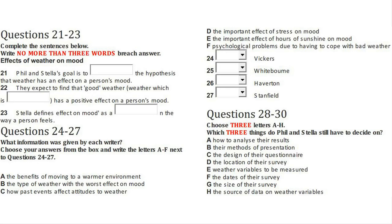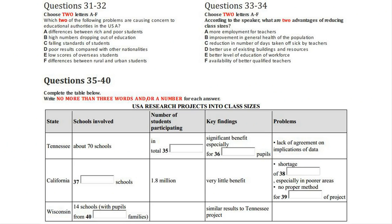Now turn to Section 4 on page 71. Section 4. You will hear a lecturer in education talking about some experiments done in the USA to investigate the effects of reducing class sizes. First you have some time to look at questions 31 to 40 on pages 71 and 72. Now listen carefully and answer questions 31 to 40.